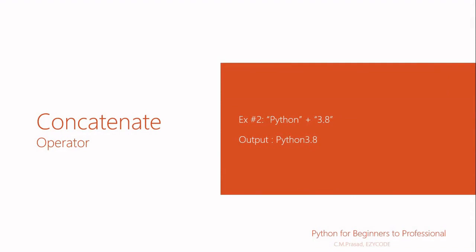In another example, we have two strings: 'python' and '3.8'. The value '3.8' is also a string because it is written in double quotes. Whatever value you write inside double quotes is treated as a string. So it will simply concatenate the two and give the output 'python 3.8'.